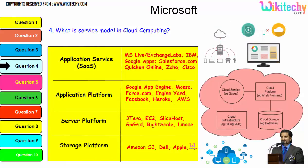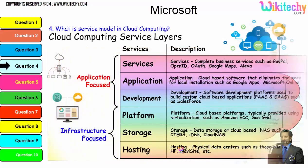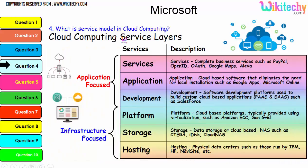Digging further into the service model: the application service, application platform, server platform, and storage platform are typical examples. Storage platform is provided by Amazon S3, Dell, and Apple. The important service layers are: services, application development, platform, storage, and hosting. These are all important services which will also be asked in cloud computing interviews.